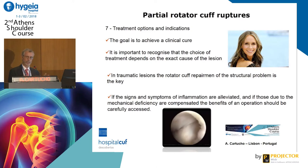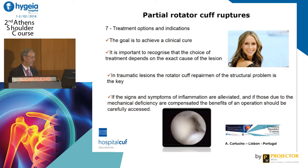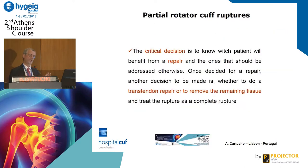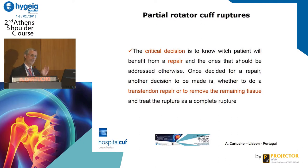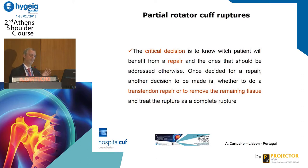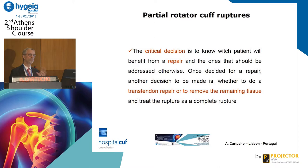We must correlate what we see with the history, clinical exam, and activity of the patient. The critical decision is to know where, when, and how to treat these patients. If we are going to repair surgically, we must decide whether to treat it in situ or to debride it all and convert it to a complete rotator cuff rupture. We also need to answer what to do with the long head of the biceps, which we know is a serious problem.